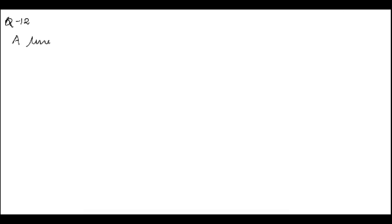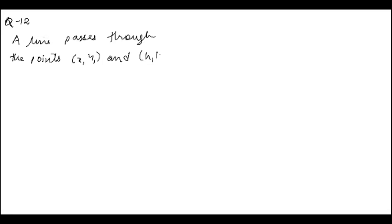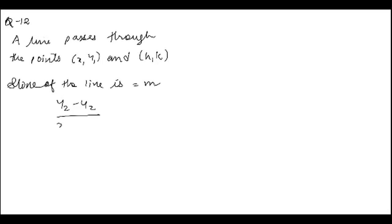Let's do question 12. A line passes through the points (x1, y1) and (x, k). The slope of the line is m. The slope can also be found using the formula (y2 - y1) / (x2 - x1), where (x1, y1) and (x2, y2) are the two points. So k minus y1 upon x minus x1 is equal to m.